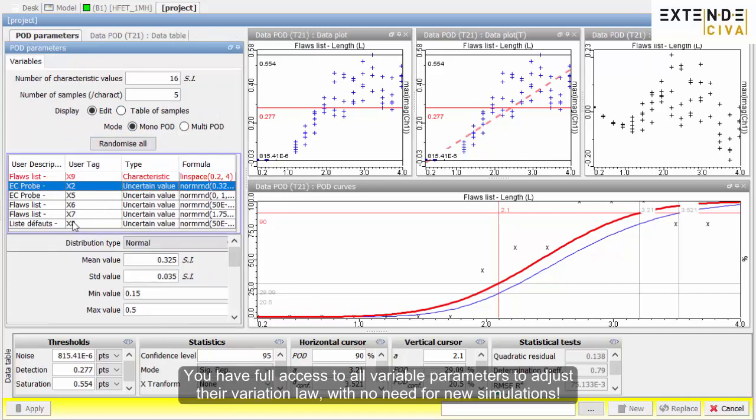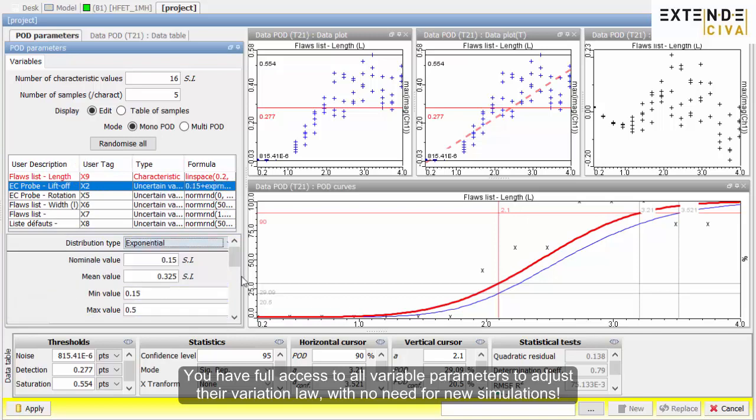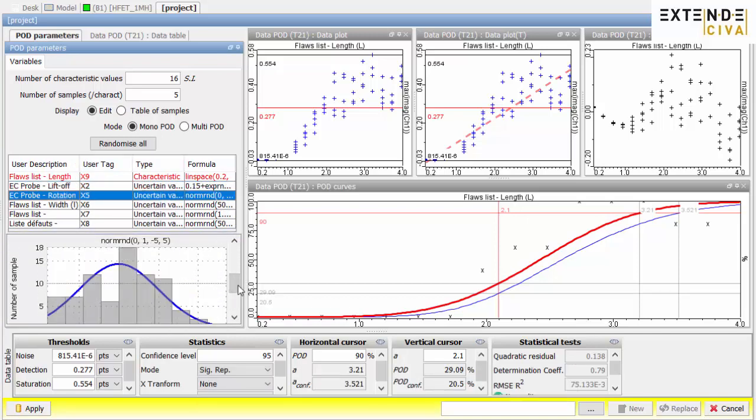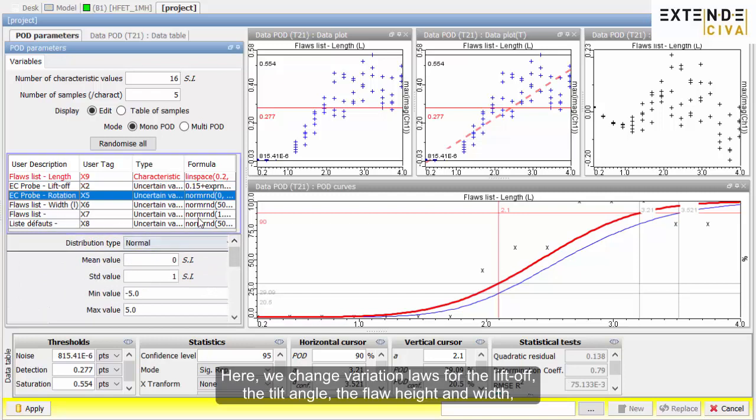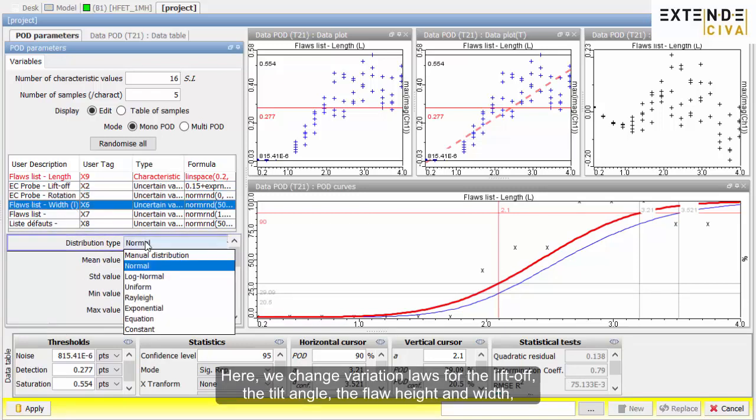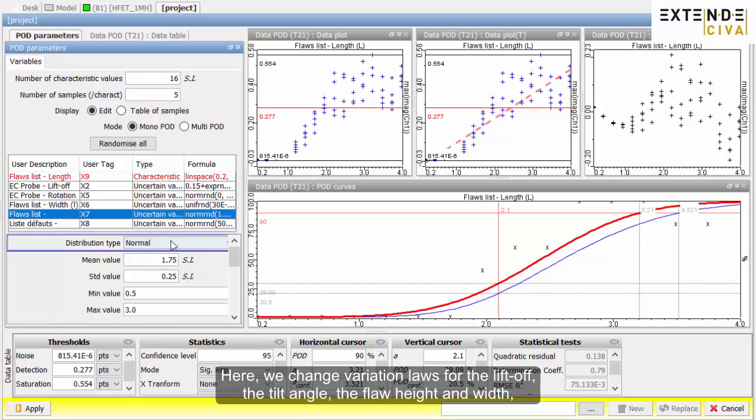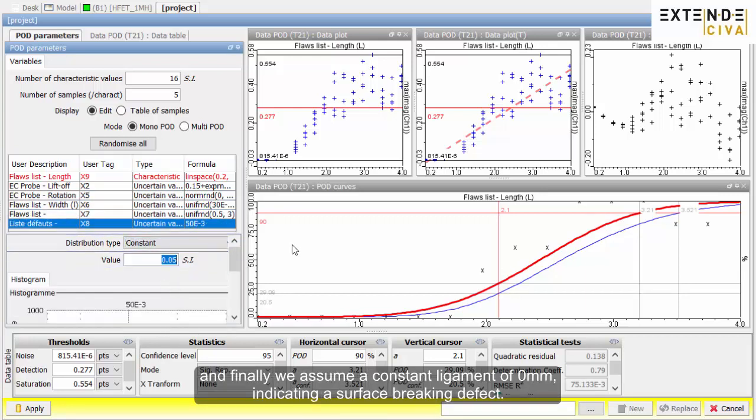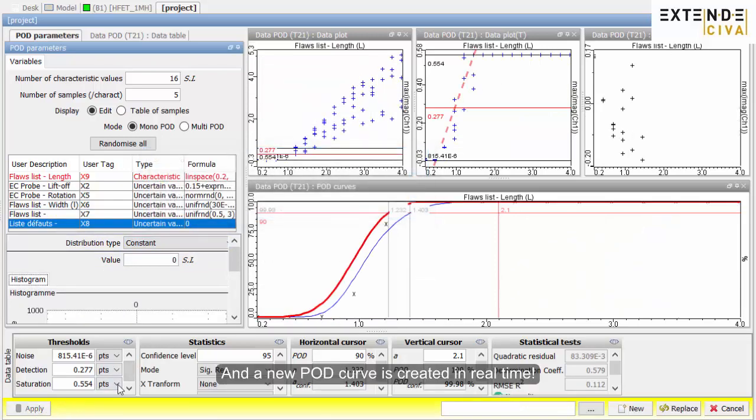You have full access to all variable parameters to adjust their variation law, with no need for new simulations. Here, we change variation laws for the liftoff, the tilt angle, the flaw height and width, and finally, we assume a constant ligament of 0 mm, indicating a surface-breaking defect. And a new POD curve is created in real-time.